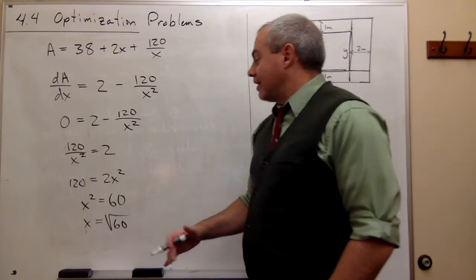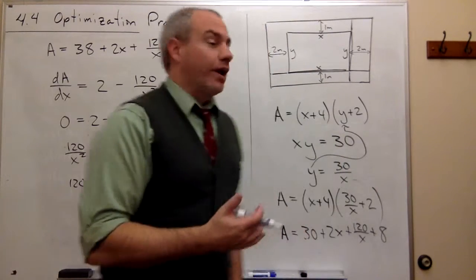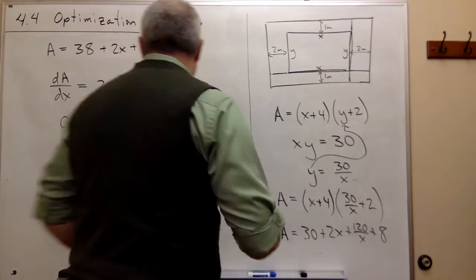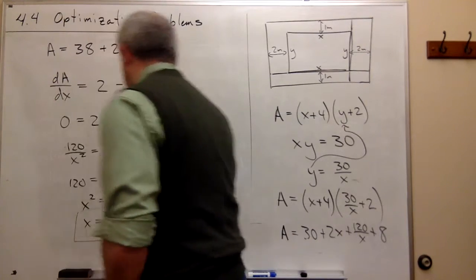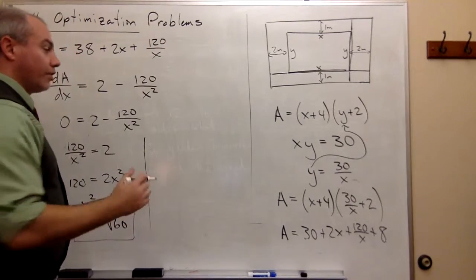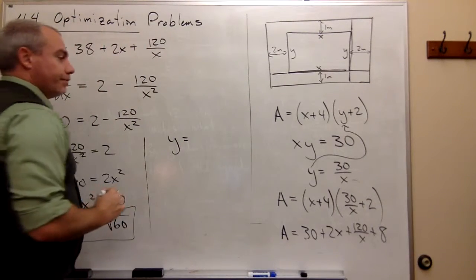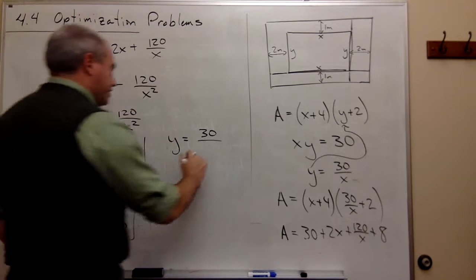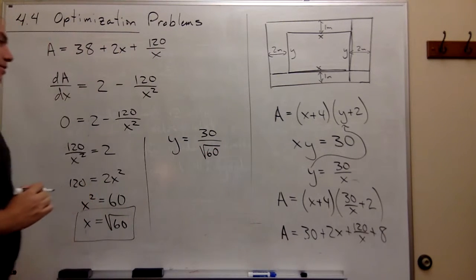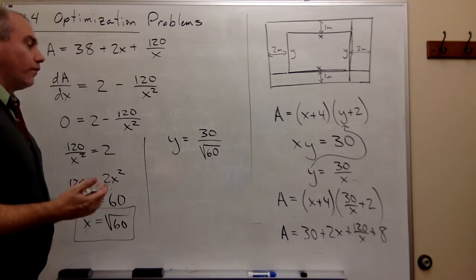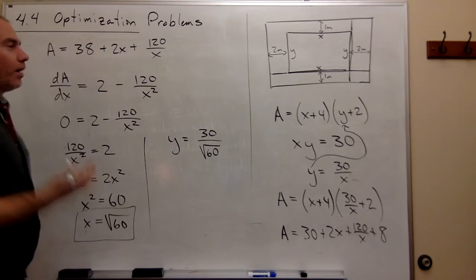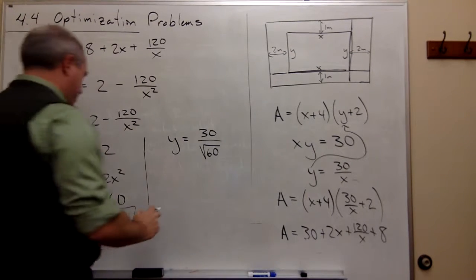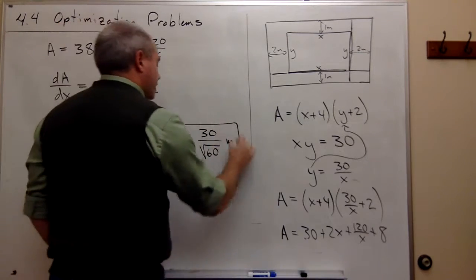Now that I know what x is, I should be able to find y as well. How do I find y if I know what x is? Well, y is equal to 30 over x. So I can say, now that I know what x is, one of the dimensions is the square root of 60. Then I can figure out y. y should be equal to 30 divided by x, but x is the square root of 60. So y is 30 over the square root of 60. And what are my units in this problem? My units are meters. So this is the square root of 60 meters, and this is 30 over the square root of 60 meters.